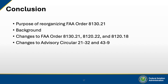In summary, the reorganization of FAA Order 8130.21 was undertaken to streamline guidance, eliminate redundancy, and align related policies across multiple documents. In this briefing, we reviewed the background of the changes, updates to Orders 8130.21, 8120.22, and 8120.18, as well as revisions to Advisory Circulars 21-32 and 43-9. These updates represent a coordinated effort to enhance the clarity and usability of FAA documentation, ensuring it better supports today's operational needs. This concludes the briefing from the Aircraft Certification Service's Policy and Standards Division, Production and Airworthiness section. Thank you for watching.